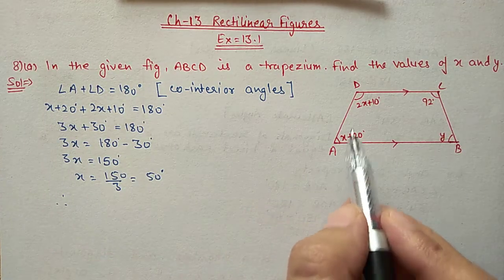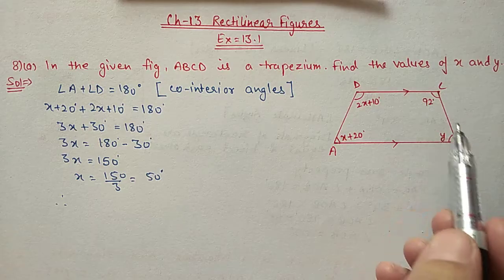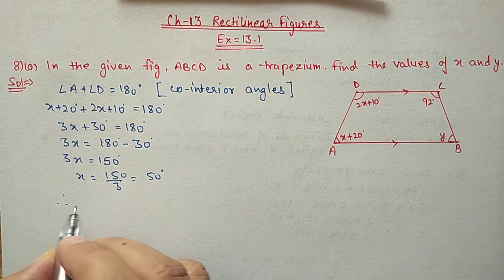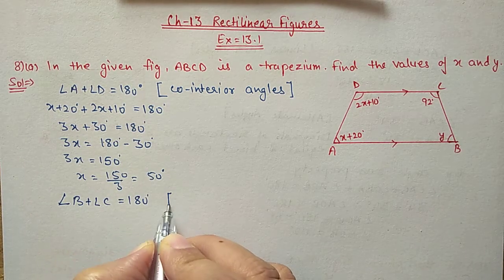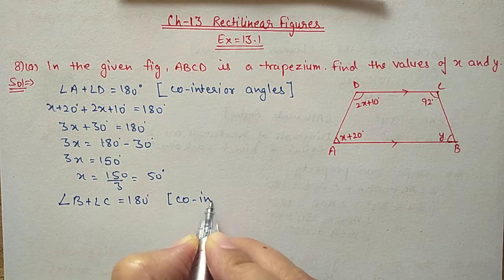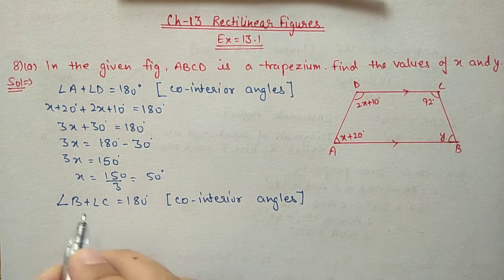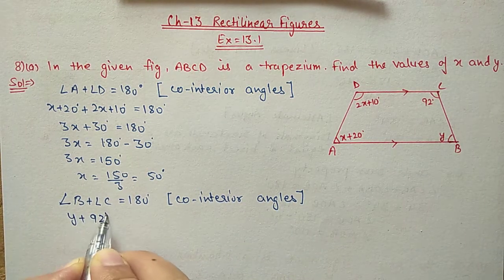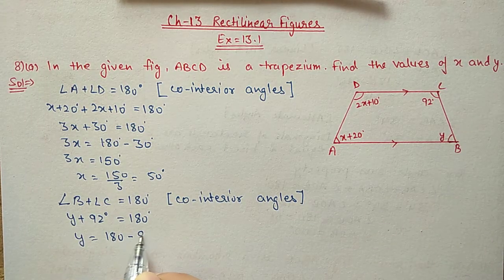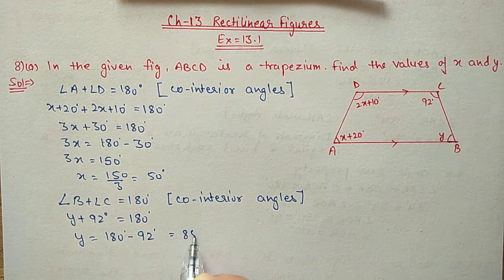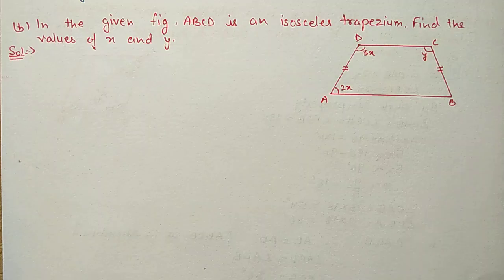Now we can use the same property for angle B and angle C. Angle B plus angle C is equal to 180 degrees, same co-interior angle property. B is Y and C is 92 degrees, equal to 180 degrees. So Y value will be 180 minus 92, equal to 88 degrees. So we got the value of X and Y.